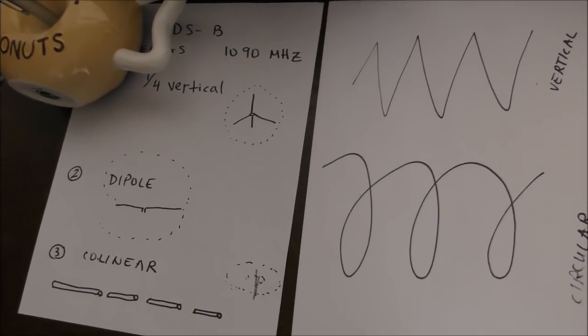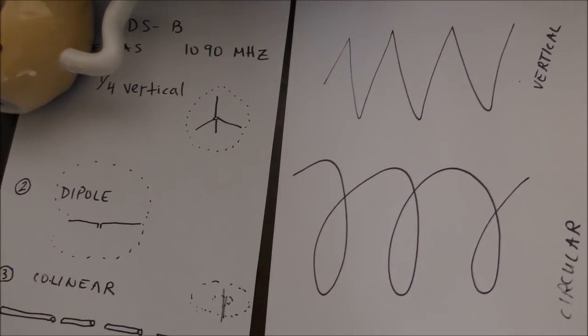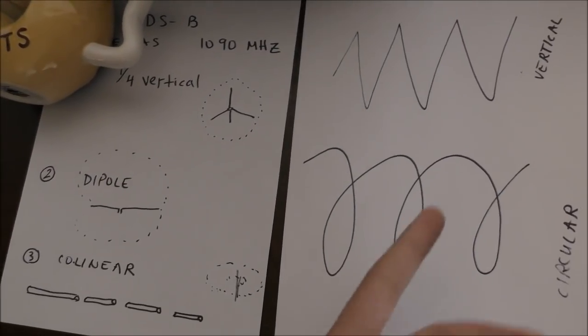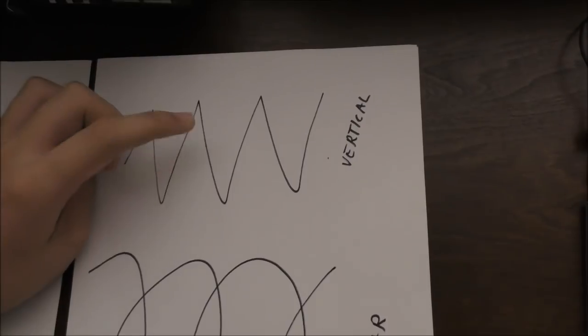There's one last thing that needs to be explained, and that's antenna polarization. These three antennas were made to receive vertically polarized signals, which means they do a normal up and down.